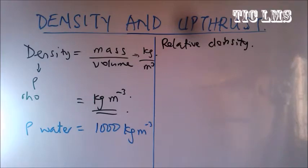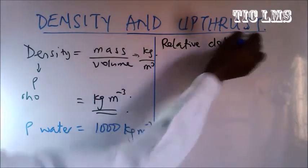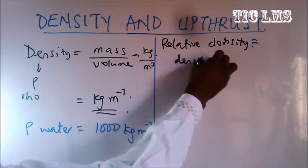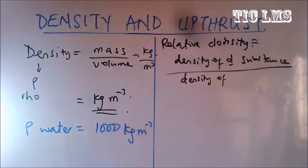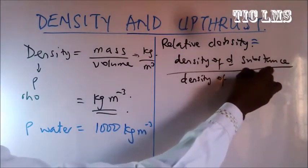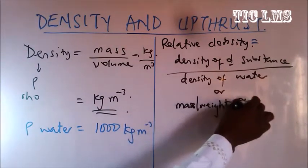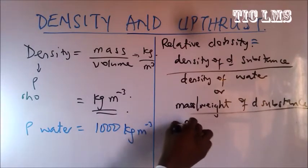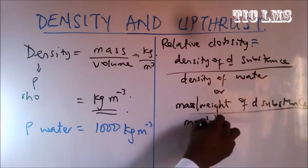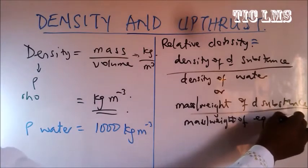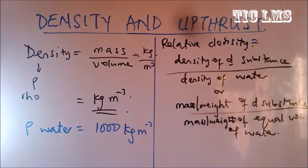We say that relative density is equal to the density of the substance over the density of water, or it can be taken as the mass or weight of the substance over the mass or weight of an equal volume of water. We shall look at several questions that use this formula.